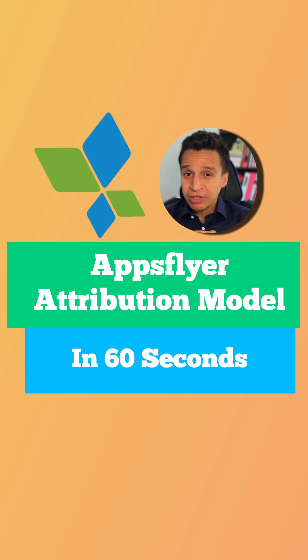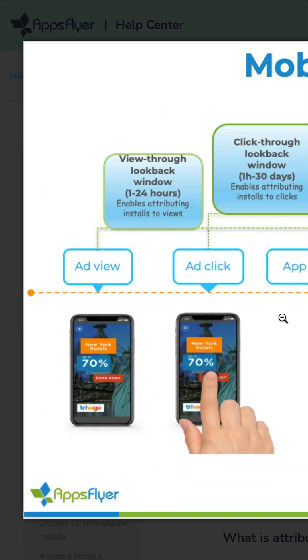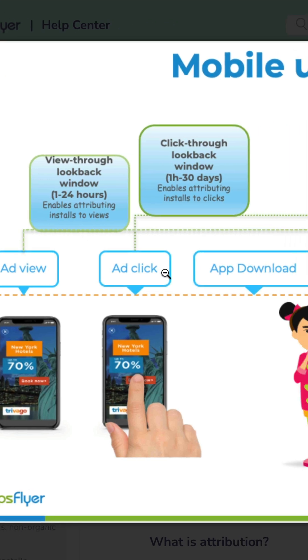Here's the App Store attribution model in 60 seconds. If we fast forward to this image that App Store provides, it's very simple. A user may click on an ad, or they may view the ad — let's say a Facebook ad or Google ad.